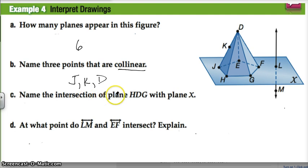Name the intersection of the plane HDG and plane X, this plane here. So where does HDG and plane X intersect? For this problem, you need to keep in mind that planes are going on infinitely in all directions. So if this plane goes on infinitely in all directions, and so does this one here, the intersection won't just be this little segment HG, it would be the line containing HG. So I'm going to write line HG.